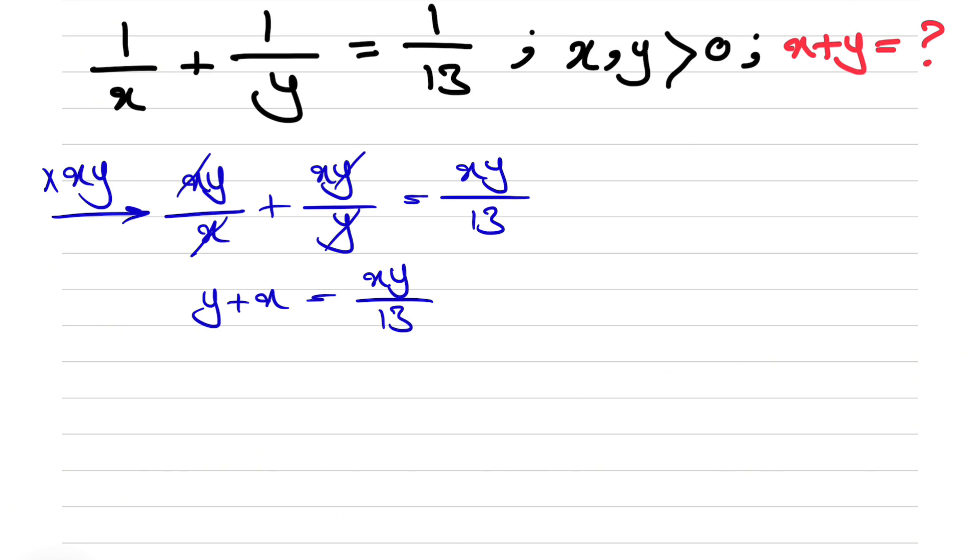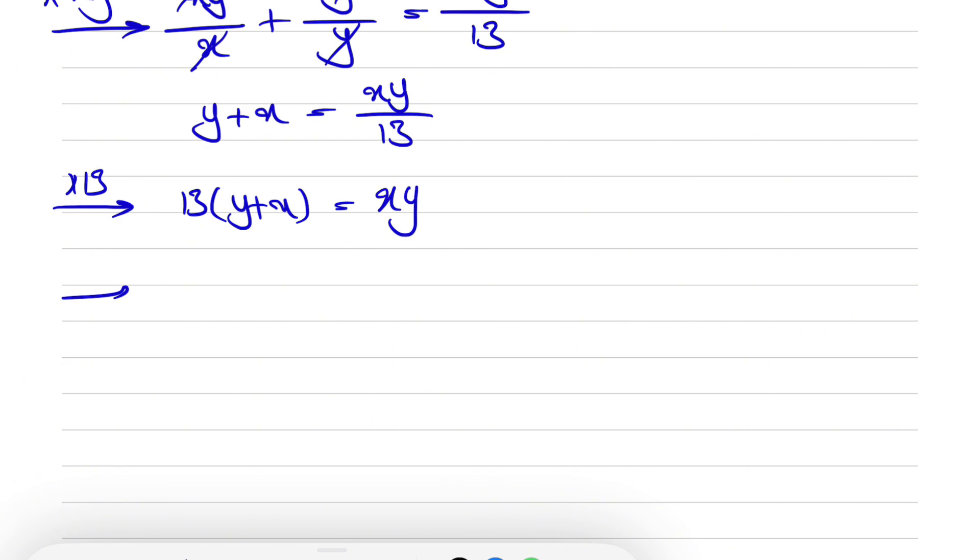Now here we're going to multiply the equation by 13. So what we're going to get is basically 13 times y plus x is equal to x times y. So we're going to multiply 13 to x plus y, so we get 13y plus 13x is equal to xy.